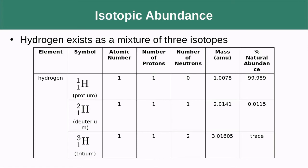Here is an example of isotopic abundance: hydrogen has three different forms. Protium has one neutron, deuterium has two neutrons, and tritium has three neutrons. They differ only in their number of neutrons and therefore have different masses and different natural abundances. 99.989% of hydrogen is protium, 0.0115% is deuterium, and tritium is so rare it's difficult to even quantify.